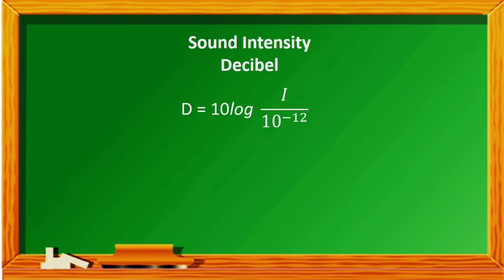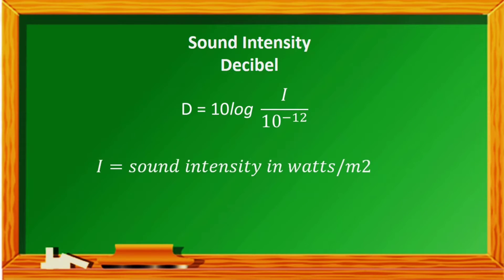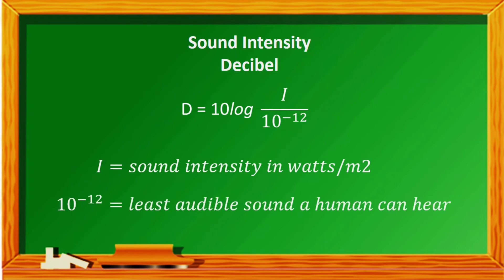Let's proceed to decibels, which measure sound intensity. It is given by the formula d equals 10 times the logarithm of (i divided by 10 raised to the power of negative 12) watts per meter squared, where 10 raised to the power of negative 12 is the least audible sound a human can hear.